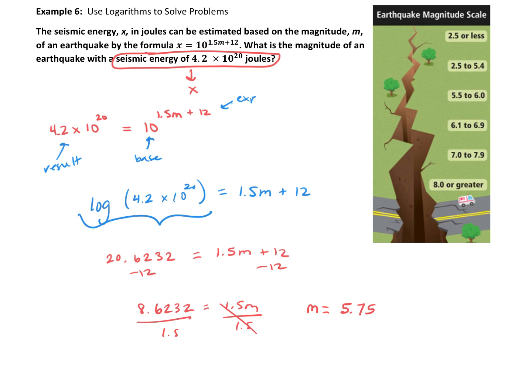All right, so if M equals 5.75, what does that mean in the context of this problem? That means that the magnitude of the earthquake is 5.75.